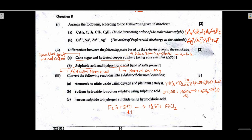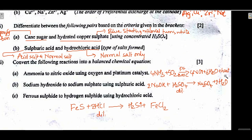Convert the following to balanced equations. Ammonia to nitric acid: 4NH3 + 5O2 → 4NO + 6H2O + heat, with platinum catalyst at 800°C. Sodium hydroxide to sodium sulfate using dilute sulfuric acid: 2NaOH + H2SO4(dilute) → Na2SO4 + 2H2O. Ferrous sulfide to hydrogen sulfide using dilute hydrochloric acid: FeS + 2HCl → H2S + FeCl2.